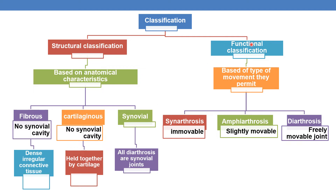Coming to the classification of joints based on function — functional classification is based on the type of movement they permit. Based on the type of movement, joints are categorized into synarthrosis, amphiarthrosis, and diarthrosis.